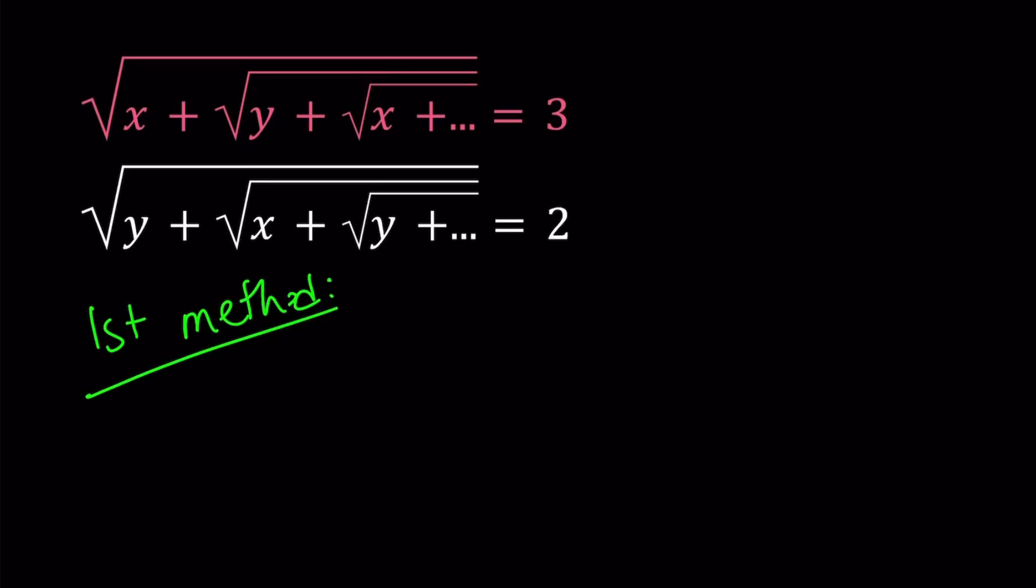Great. So for my first method, I'm going to observe the following. Since looking at the first equation, I noticed that this expression contains itself, obviously, infinitely many times. So this part is also the same as the whole thing. Therefore, that should equal 3 as well.